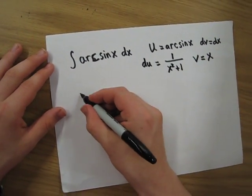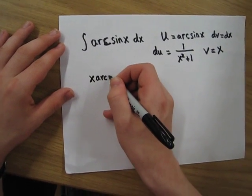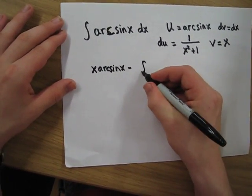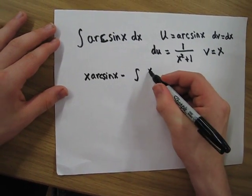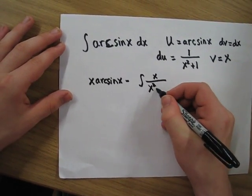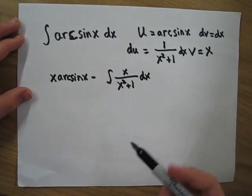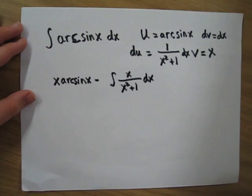When we apply the formula, we get x arcsine x from uv, minus the integral of x over x squared plus 1 dx. That's from multiplying du and v.